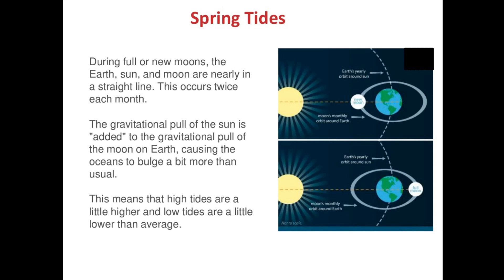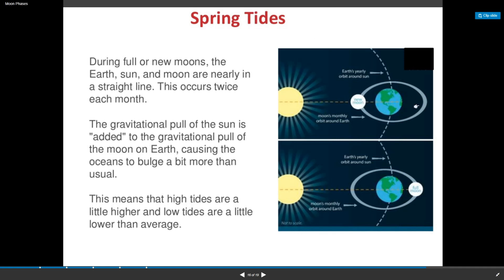During full or new moons, the earth, sun, and moon are nearly in a perfect straight line. This occurs twice each month. The gravitational pull of the sun is added to the gravitational pull of the moon on the earth, causing the oceans to bulge more than usual. This means high tides are higher and low tides are lower. Since everything is in a straight line, the sun and moon work together, pulling the water on both sides, causing unbelievably high and low tides.